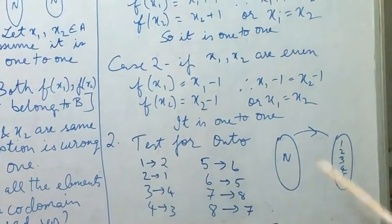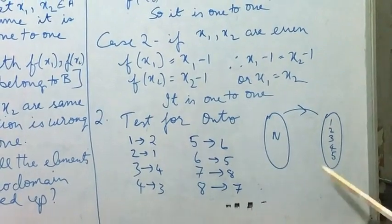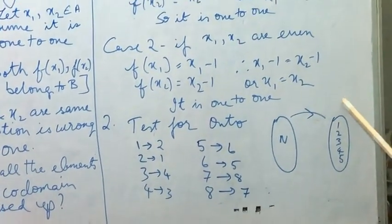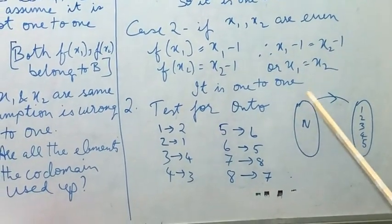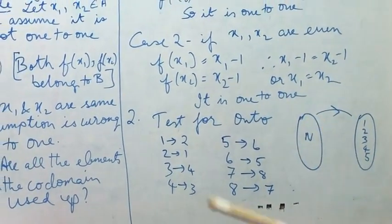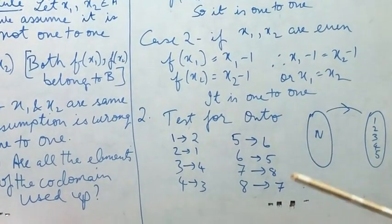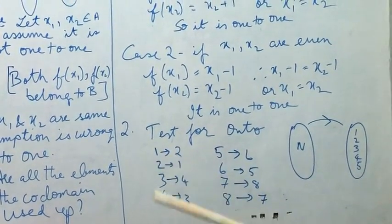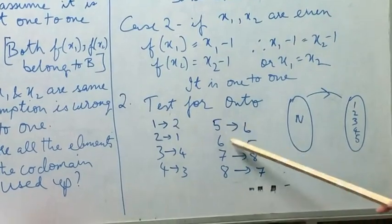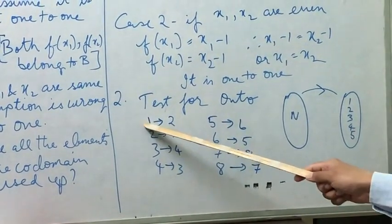To test for onto, take every number, every natural number inside set B. You can trace back and see that you will be having a pre-image in set A. For that matter, you could also try it reverse. You take the set of natural numbers, take a few: 1, 2, 3, 4, 5, 6, 7, 8.